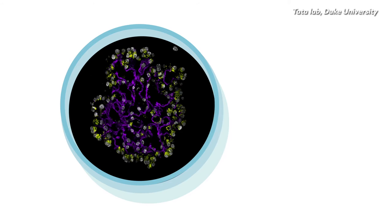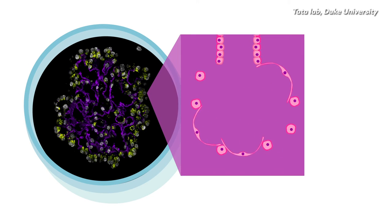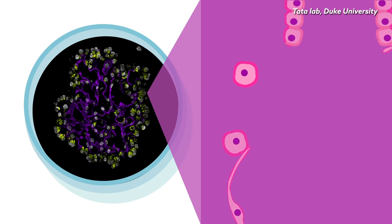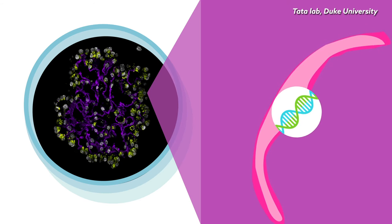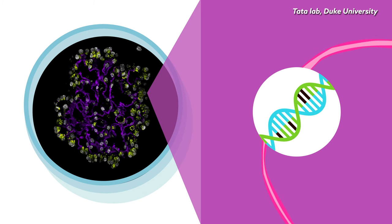They found that inside these organoids, the blocky stem cells enter an intermediate state on their way to generating the thin AT1 cells. The stem cells stretch considerably while passing through this transitional state, making them vulnerable to DNA damage.